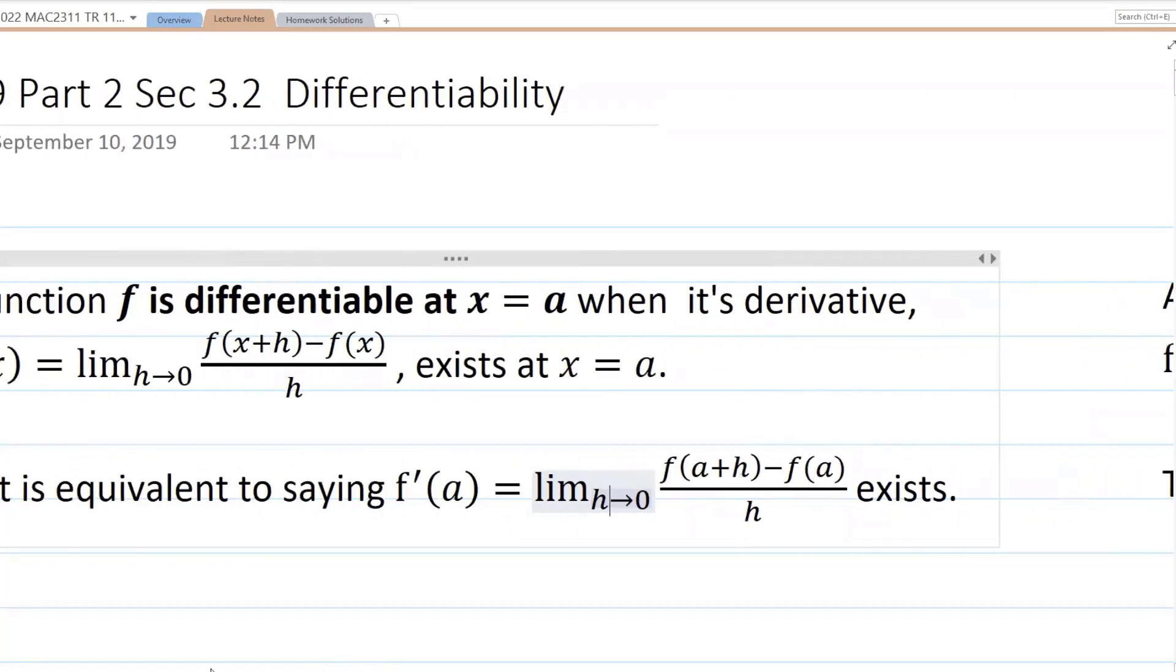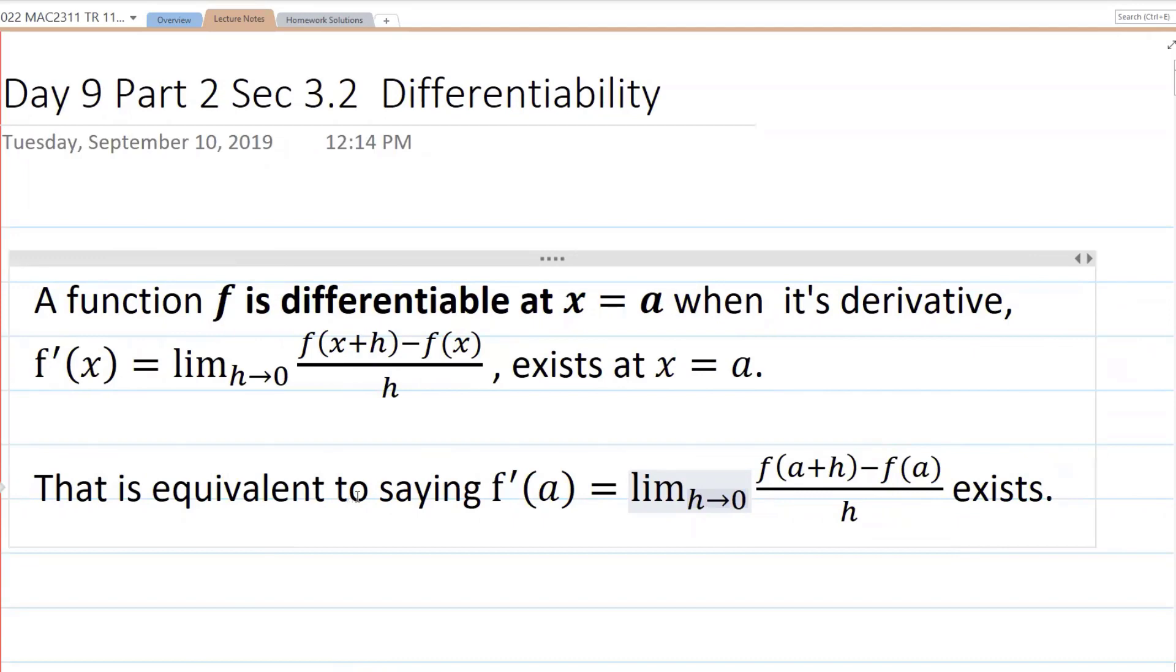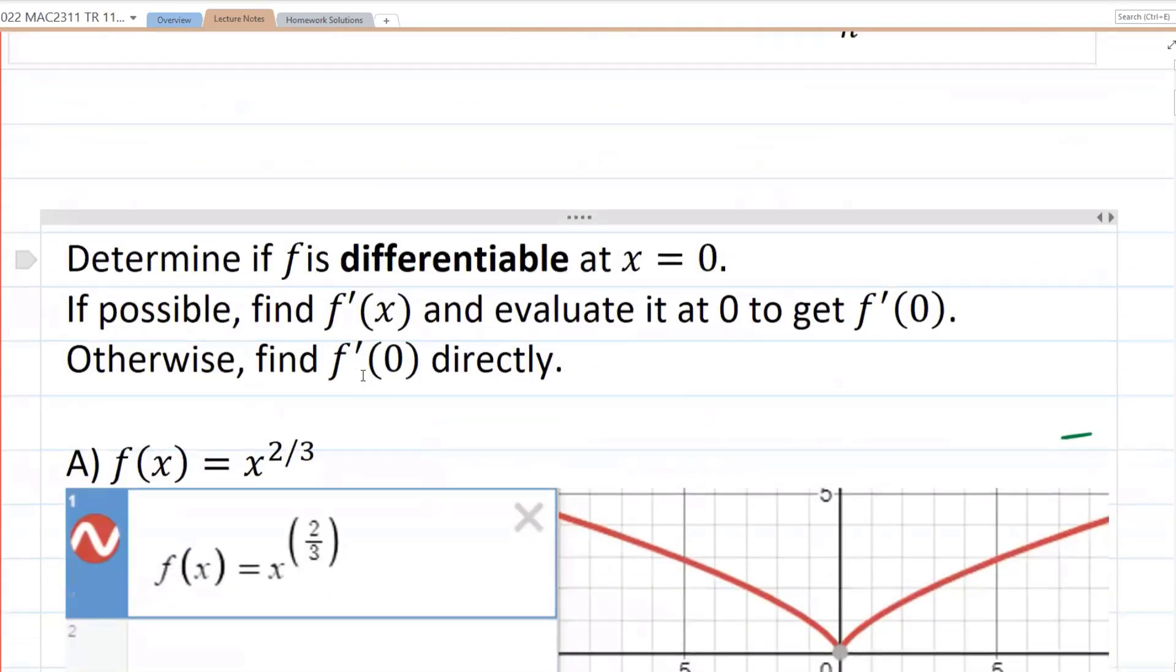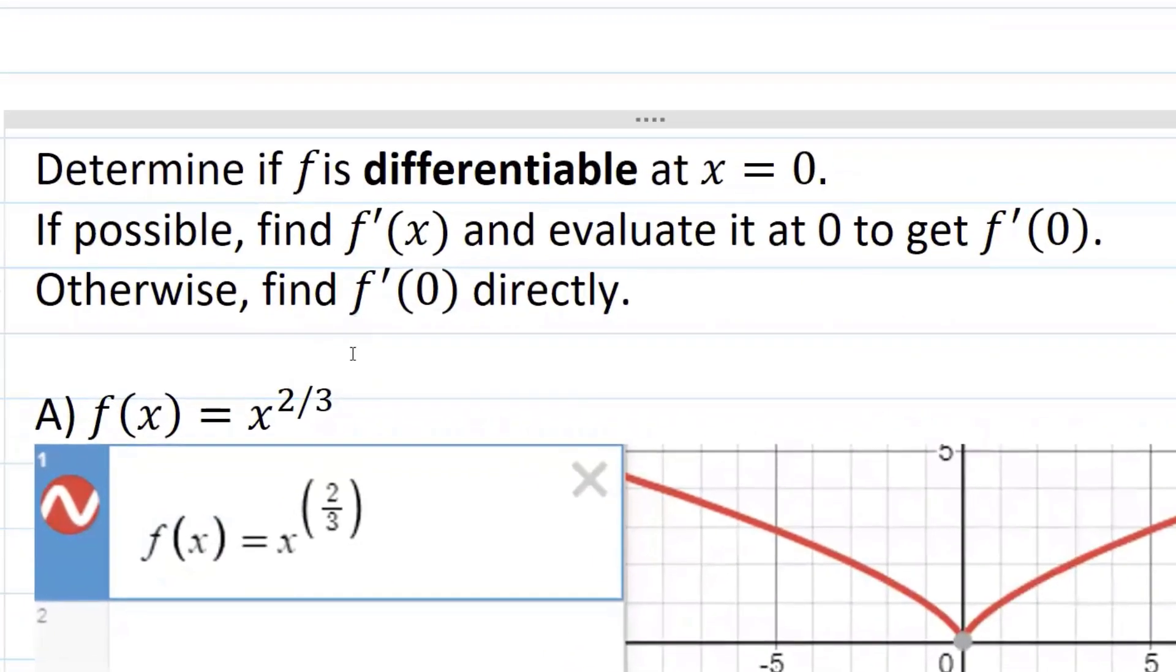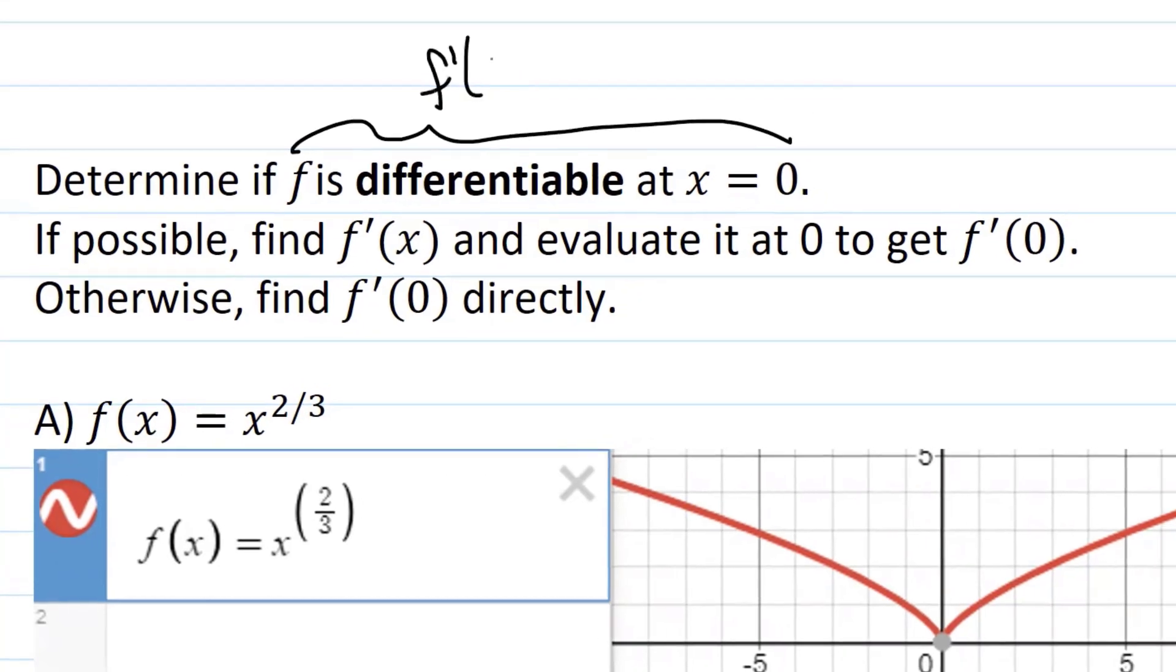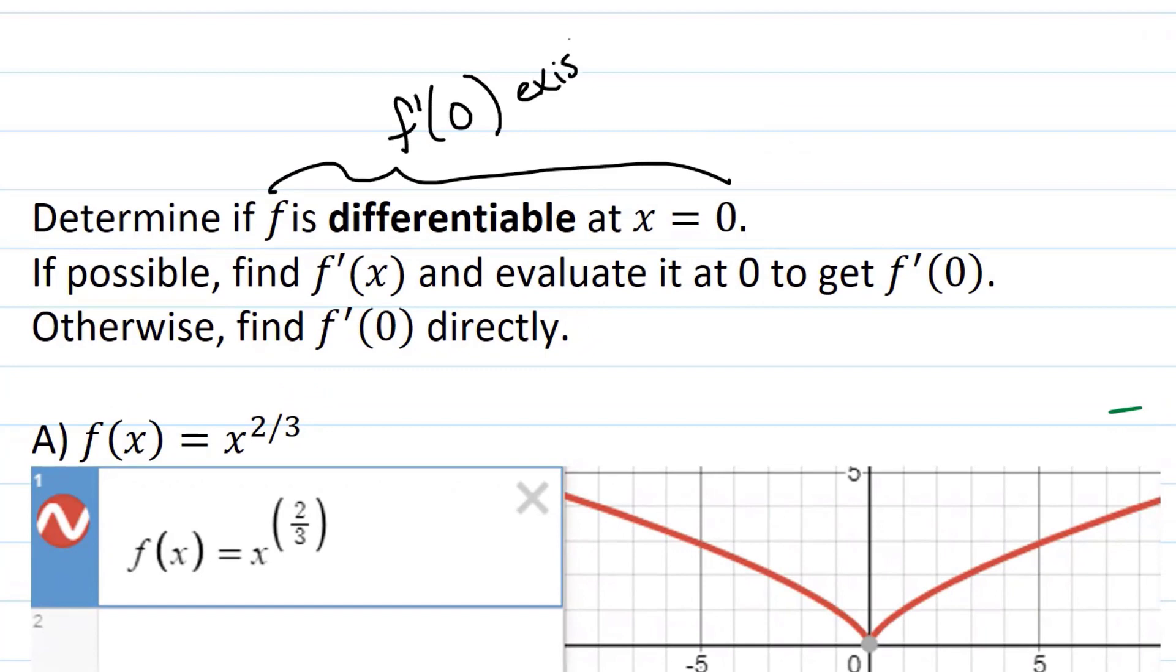So we're going to explore what would make the derivative not exist. For example, here we have the instructions: determine if f is differentiable at the point x equals zero. If possible, find f prime of x and evaluate it at zero to get f prime of zero. Remember, to be differentiable at x equals zero means that f prime at zero exists.